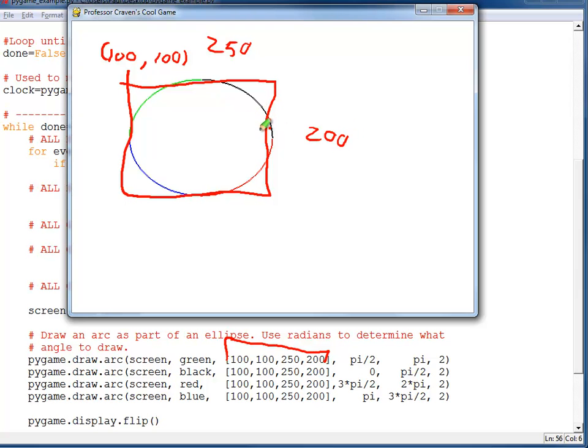The start and end points for the angles are specified in radians down here. Our black starts at 0 and goes up to pi over 2. The green one right here is pi over 2 going to pi. And pi is right over here.